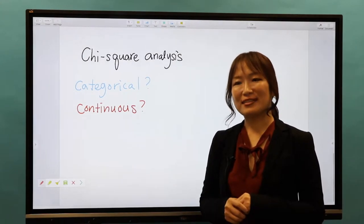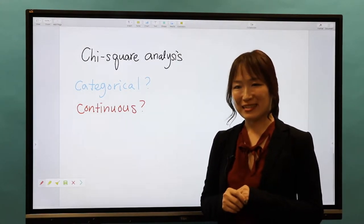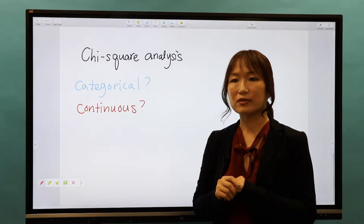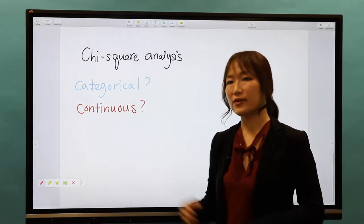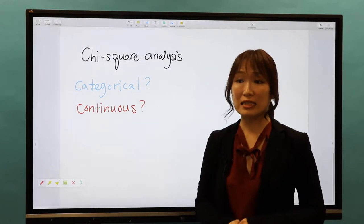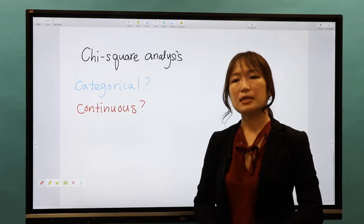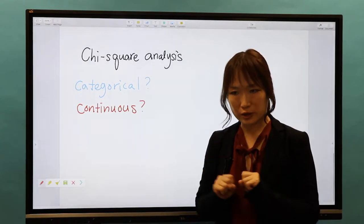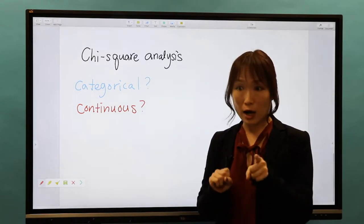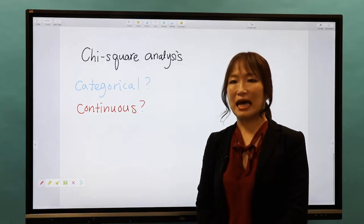Let's review today's topic of chi-square analysis. We discussed categorical variables versus continuous variables and contingency tables. Now, let me ask you a few questions to see how well you understand these concepts.